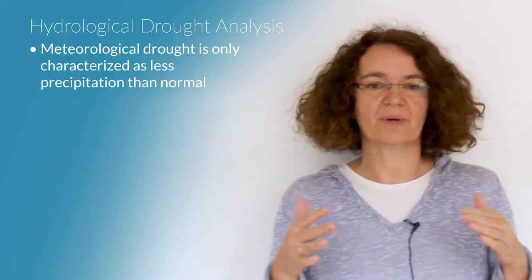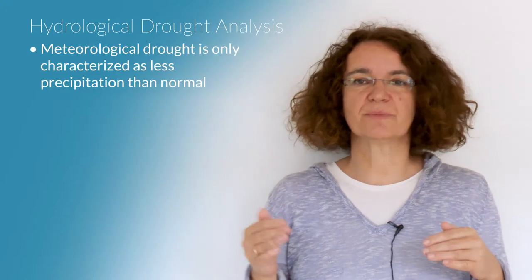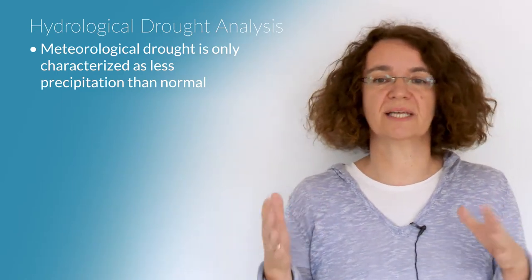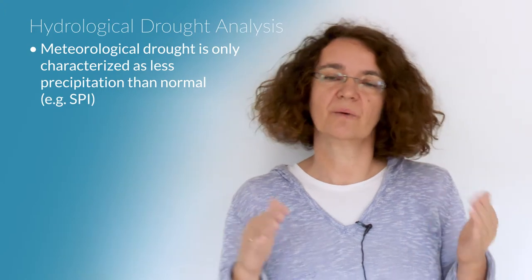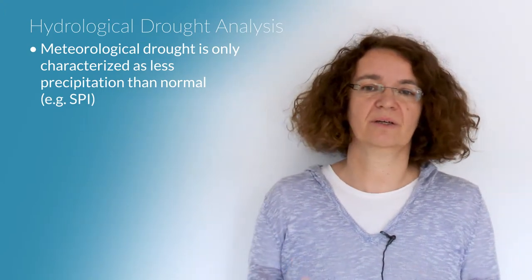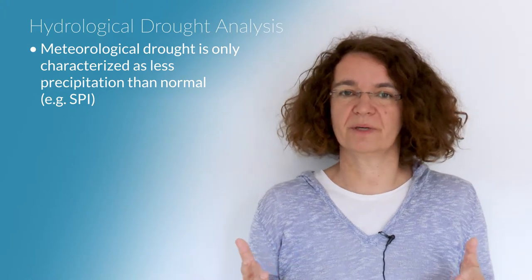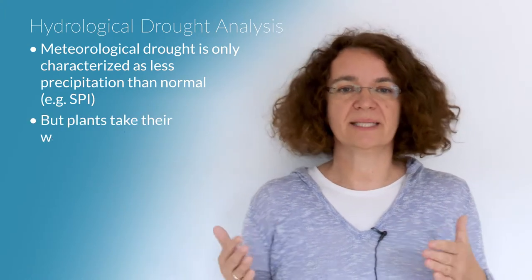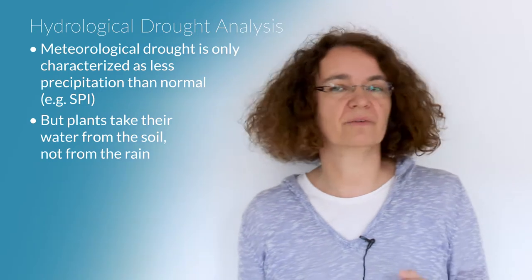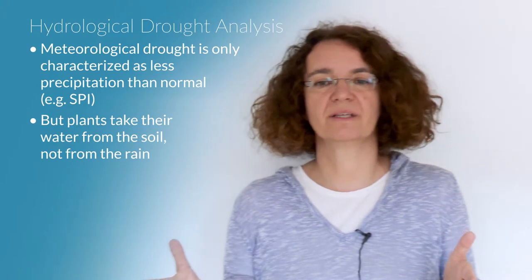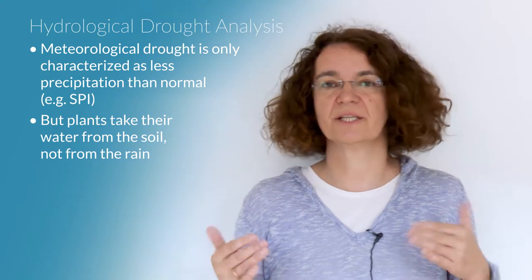Most drought analysis considers only meteorological drought where drought is characterized as less precipitation than normal. For example the widely used standardized precipitation index SPI quantifies the deviation of precipitation from normal conditions. However, when you think of plants, plants take their water from the soil, not from the rain. So when assessing drought risk for plants we should rather base the drought hazard evaluation on how much water is in the soil.